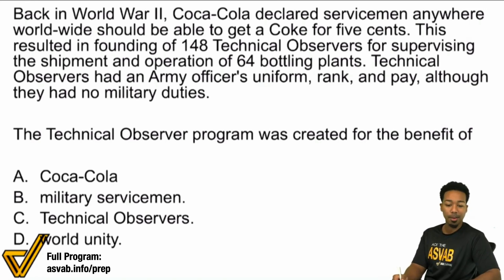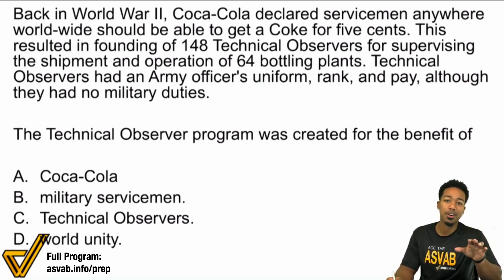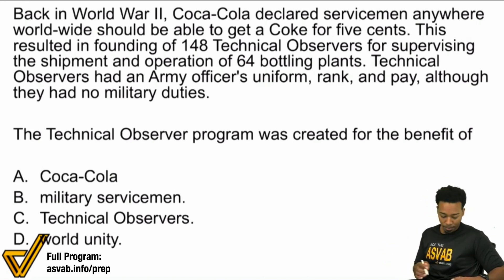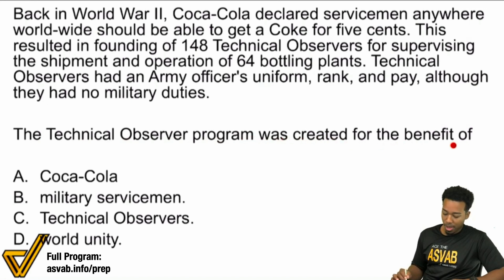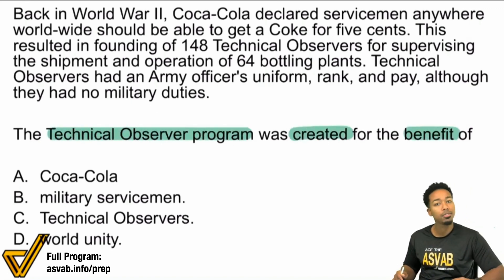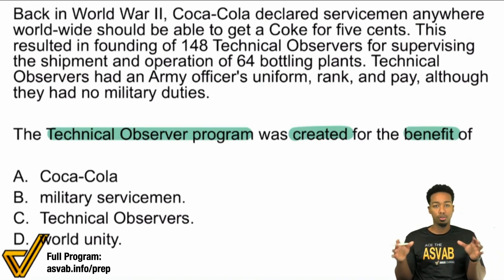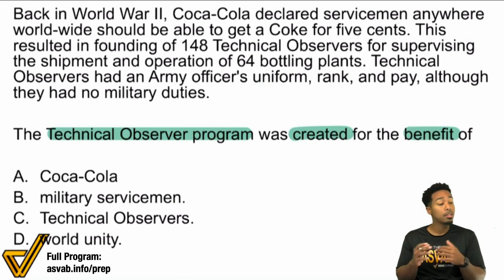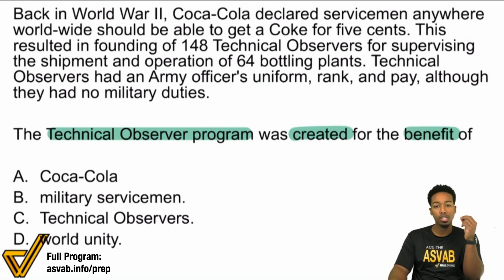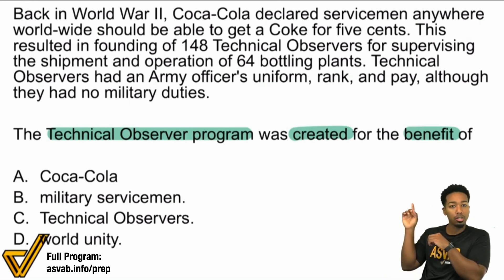We've got paragraph comprehension. How do we do this? Remember, the first thing you always want to do is read the question. You want to read the question because it's going to tell you what strategy you're going to want to go with. So here it says: the Technical Observer Program was created for the benefit of what or who? The biggest mistake that a lot of people make — and I mean like 90% of the people who take this subtest — is that they try to use the knowledge that they have as opposed to using the knowledge from the passage.